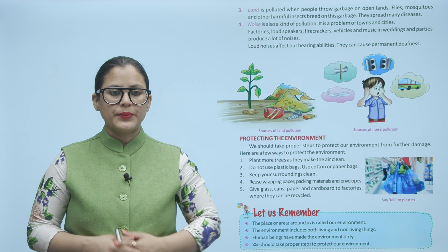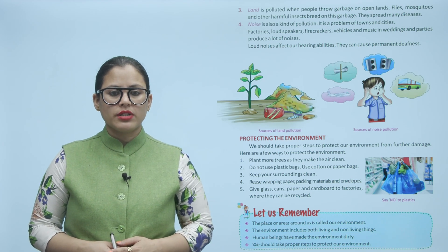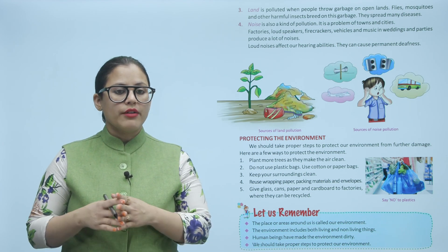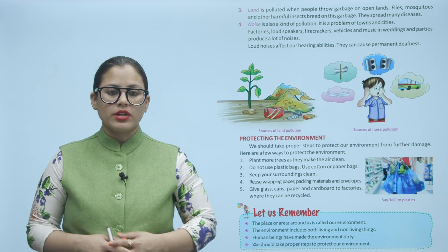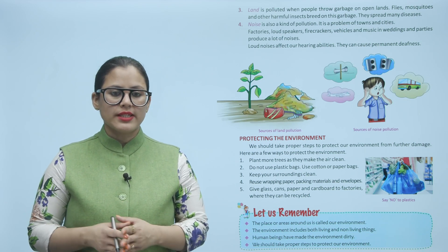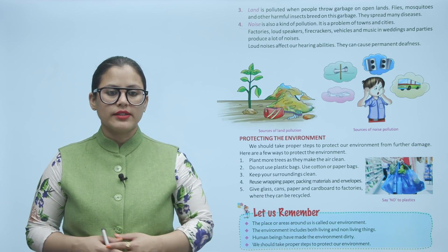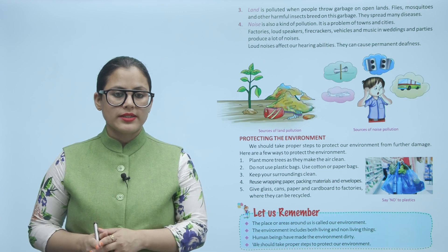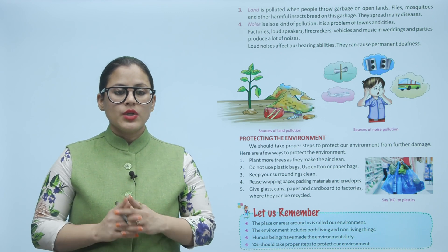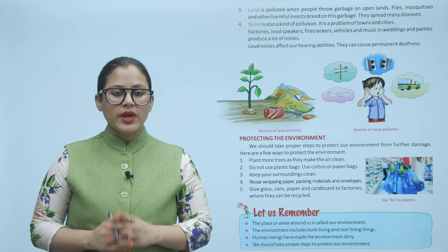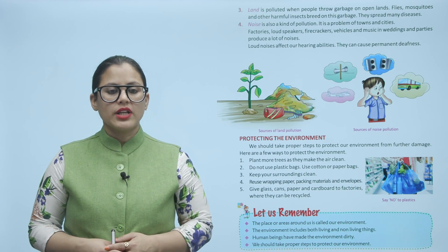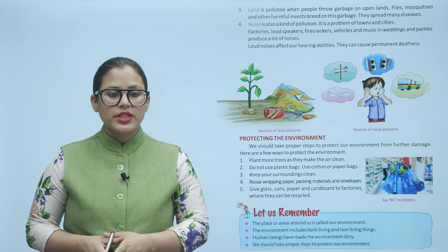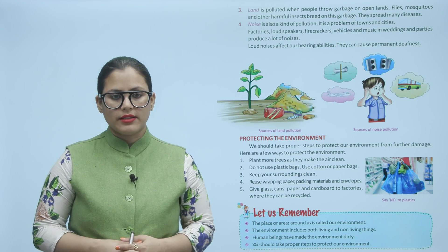Protecting the environment: we should take proper steps to protect our environment from further damage. Here are a few ways to protect the environment: plant more trees as they make the air clean; do not use plastic bags, use cotton or paper bags; keep your surroundings clean; reuse wrapping paper, packing materials and envelopes; give glass, cans, paper and cardboard to factories where they can be recycled.